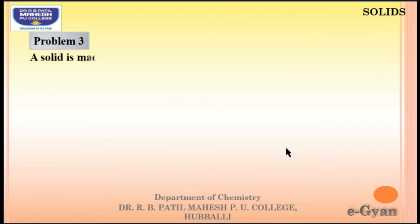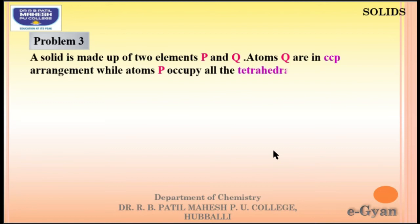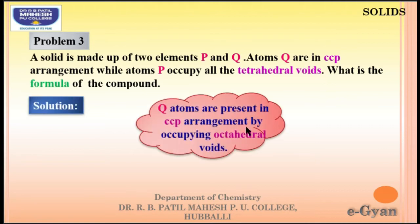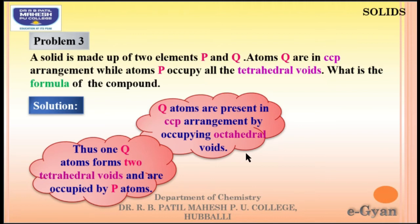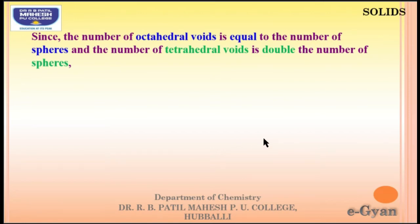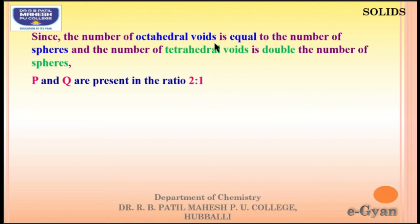Third numerical: a solid is made up of two elements P and Q. Atoms of Q are in CCP arrangement while P occupies all the tetrahedral voids. One Q atom forms four tetrahedral voids occupied by P atoms. Since the number of octahedral voids equals the number of spheres (n), and tetrahedral voids are double (2n), the number of P to Q spheres is in the ratio 2:1. The formula for octahedral voids is n and tetrahedral voids is 2n.